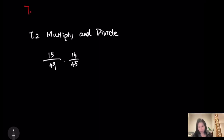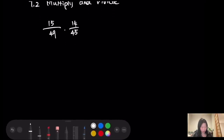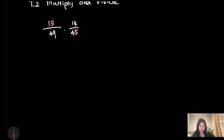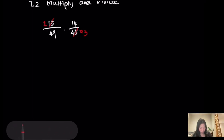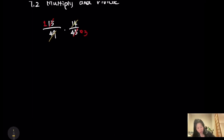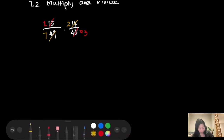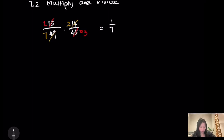When you look at these two fractions multiplied together, the first step you want to do is to reduce the common factor from the numerator and the denominator. 15 and 45 can both be divided by 15, so I have 3 left on the bottom and 1 on the top. For 49 and 14, they have a common factor of 7, so I have 7 and 2 left. Now the function has become 1/7 times 2/3. When you multiply, you multiply the numerators and then the denominators: 1 times 2 over 7 times 3, giving 2/21.